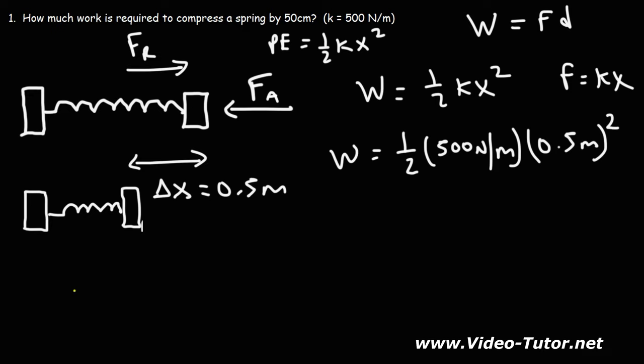So focusing on the units, k is newtons per meter, and then x squared, that's meters times meters. So you end up getting newtons times meters, which is the joule. So one newton times one meter gives you one joule.